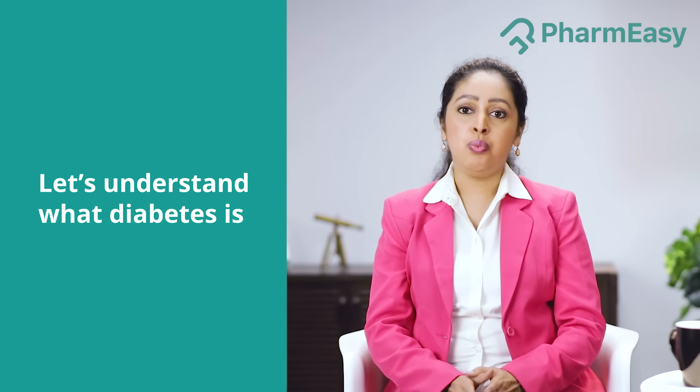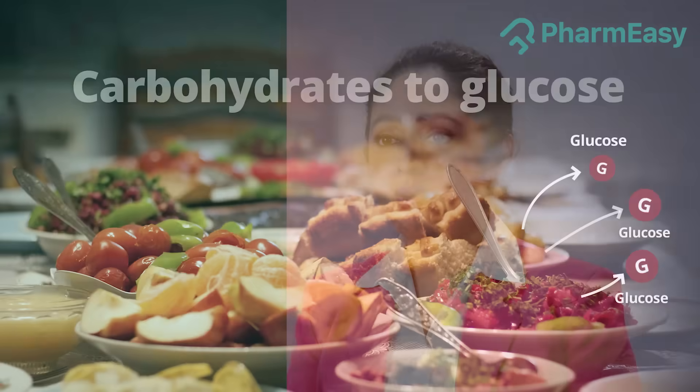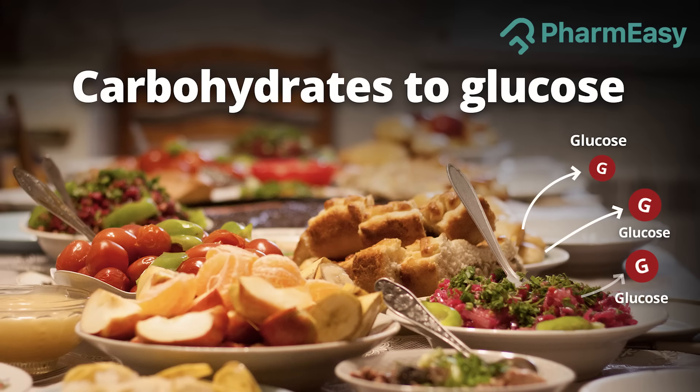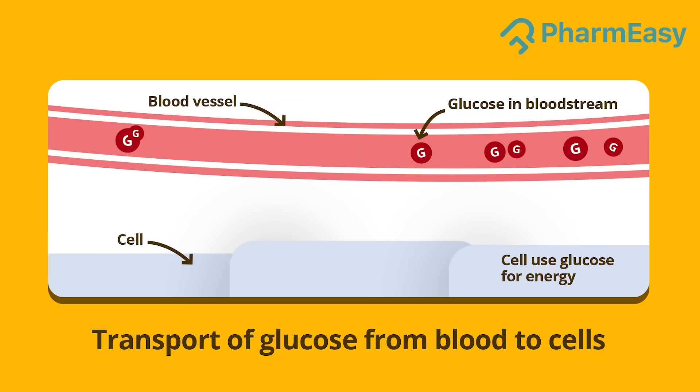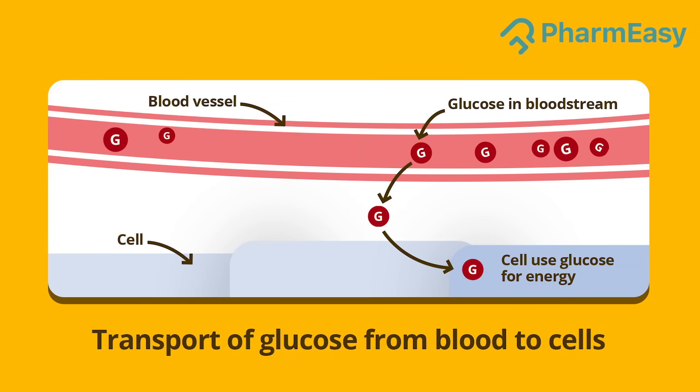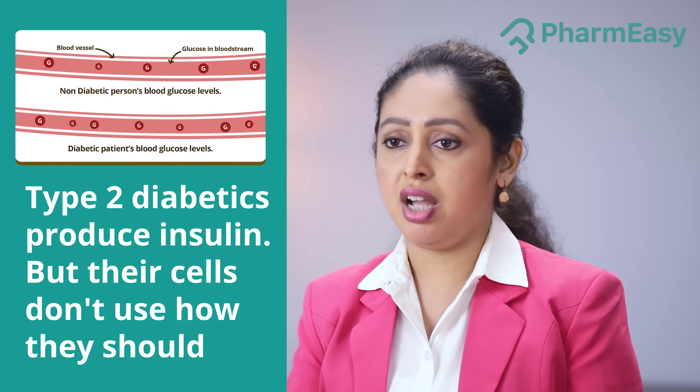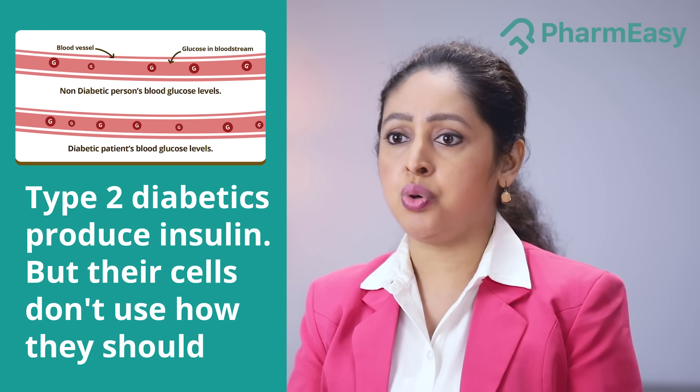Let's understand what diabetes is. Normally, the carbohydrates from the food we eat are digested to a simpler sugar called glucose. Insulin is a hormone produced by our pancreas that aids in the transport of glucose from your blood to the body cells, where it is used for the generation of energy. Type 2 diabetics produce insulin but their cells don't use it the way they should, causing glucose levels to build up in the blood. This means that diabetes is a metabolic disorder with chronic high blood glucose levels.